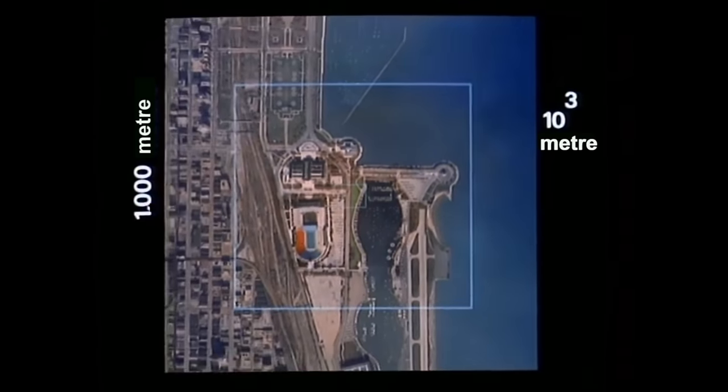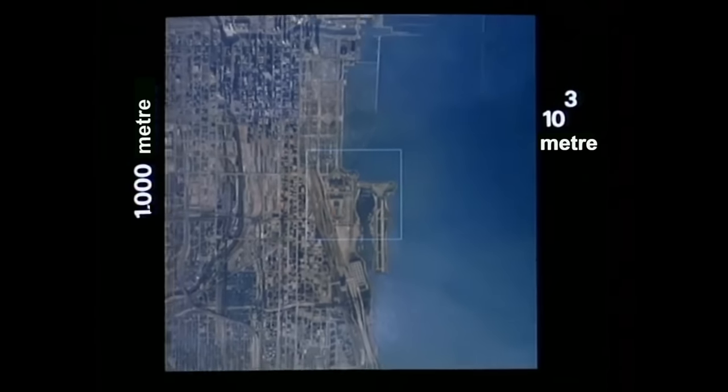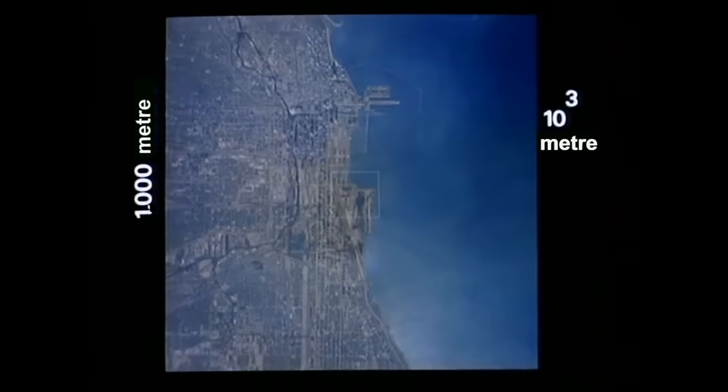Bu kare bir kilometre yani bir metre genişliğinde ve bir yarış arabası bu mesafeyi on saniyede alabilir. Göl kenarında büyük şehri görüyoruz.